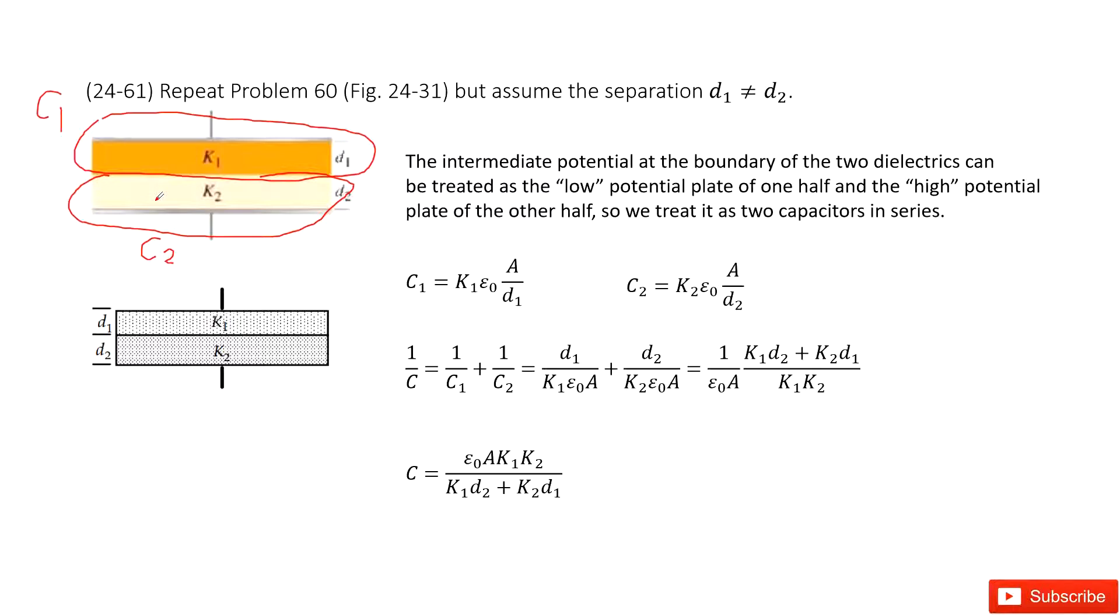So this tells us the capacitor c1 is in series connection with c2. Now the problem can be simplified as finding the equivalent capacitance for two capacitors c1 and c2, and they are in series connection. So that will be very simple.